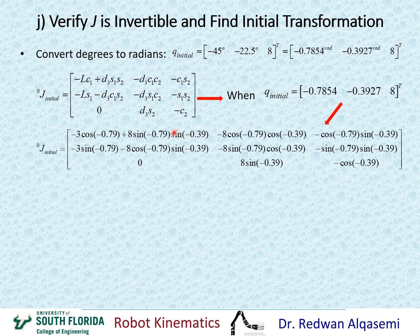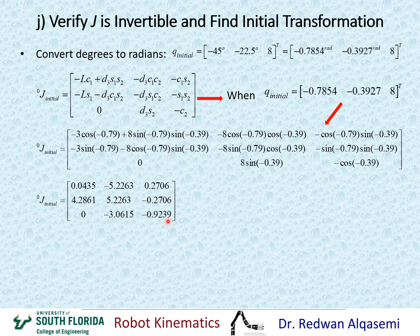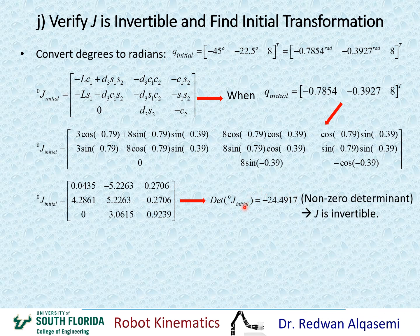To find whether the Jacobian is invertible, I compute its determinant. The determinant of the Jacobian evaluates to negative 24.49, which is non-zero. Since it's not zero, J is invertible. If the determinant were zero, J would not be invertible. In this case, the non-zero answer confirms J is invertible.